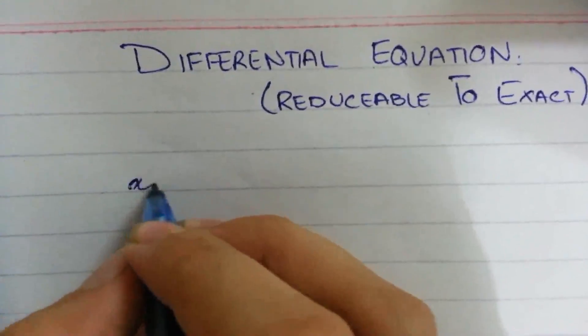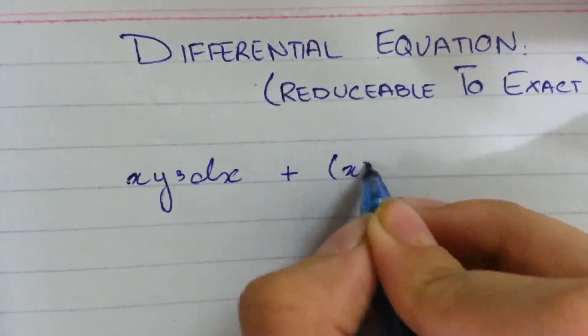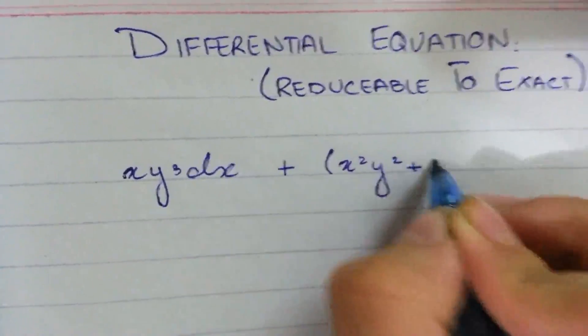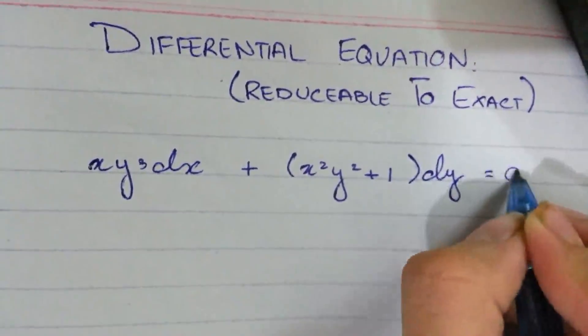Let's consider the equation xy³dx + (x²y² + 1)dy = 0.